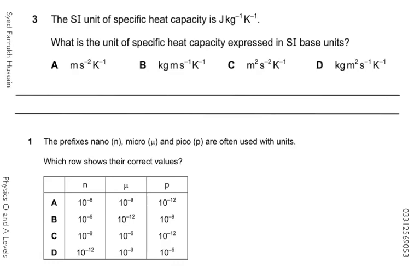In question number three, the SI unit of specific heat capacity is joule per kilogram per kelvin, and we have to highlight which unit is actually SI base unit out of the four options. Starting from the units given — joule per kilogram per kelvin — joule is not an SI base unit because we have just five SI base units in our course: meter, kilogram, second, kelvin, and ampere.